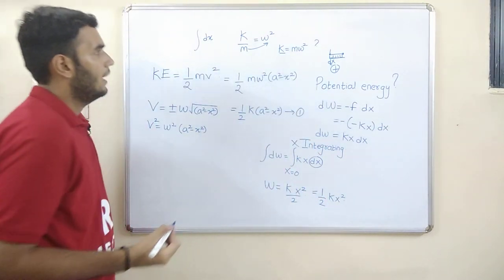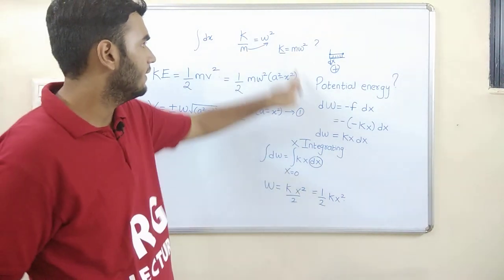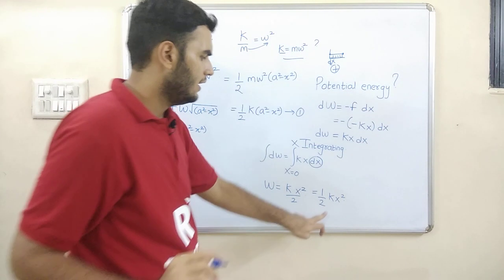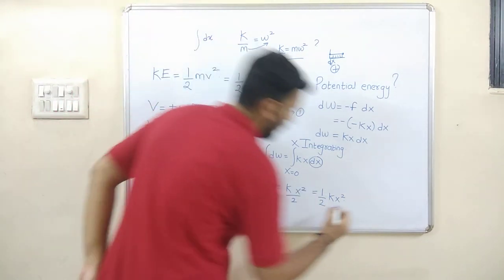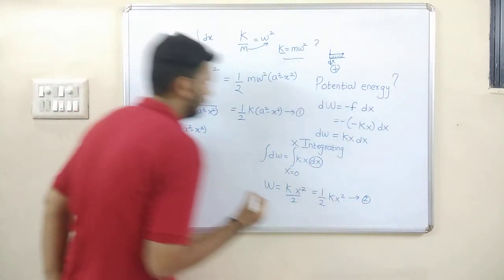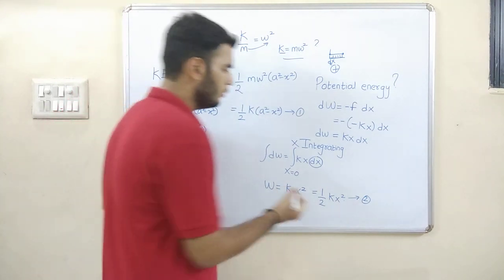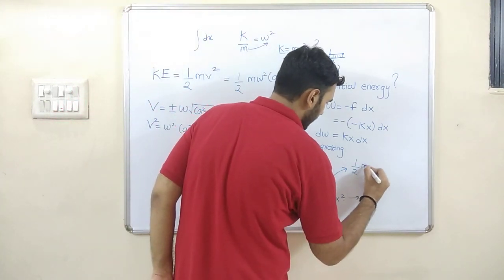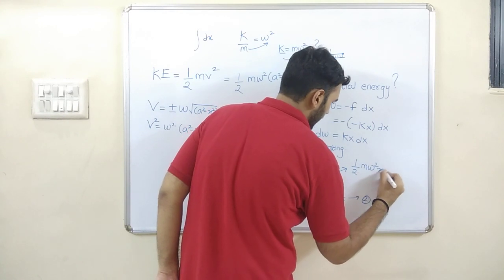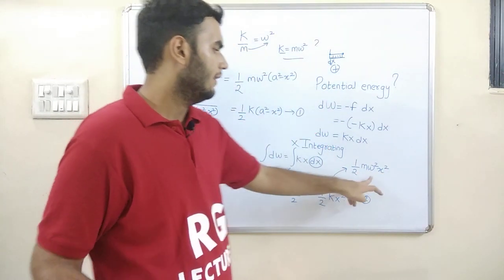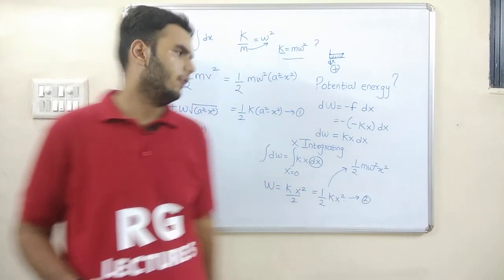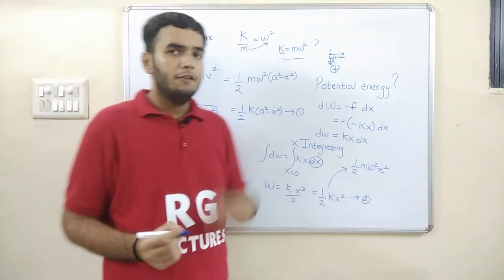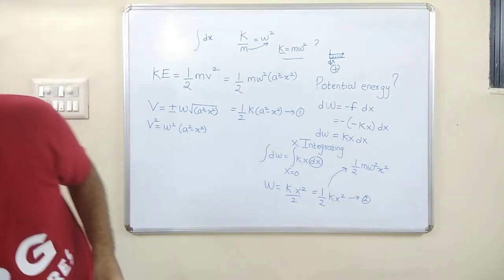Since k = m·omega², if I want the equation in those terms I can also write PE as half m·omega²·x². In an exam it can appear in either form, so both are valid. Finally, I have derived the formulas for both kinetic and potential energy.